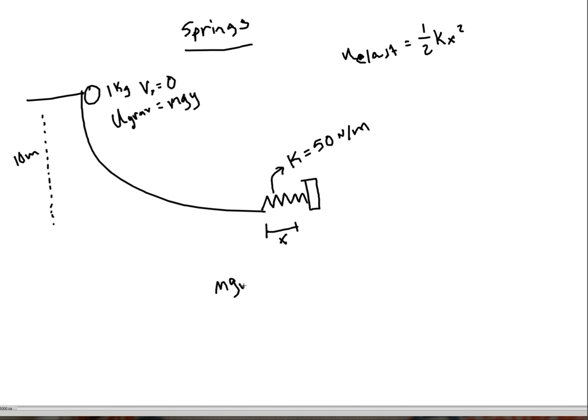mgy equal to one half k x squared and I can solve for x. So I plug in my mass is 1, gravity is 9.8 and y is 10. So 1 times 9.8 times 10, set that equal to one half, my k is 50, and then this is x squared. So 1 times 9.8 times 10 is 98, equal to half of 50 is 25.